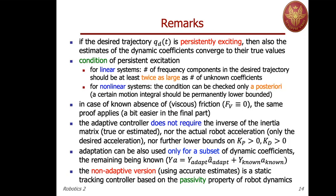The non-adaptive version — the Slotine and Li controller with accurate estimates where adaptation is not needed — is a static trajectory tracking controller that exploits the passivity property of the robot dynamics. There are other possible adaptation laws; some simplify in the case of regulation. At the end of this presentation there are remarks on another adaptive regulator that adapts only the gravity term, which I will leave for your own study.